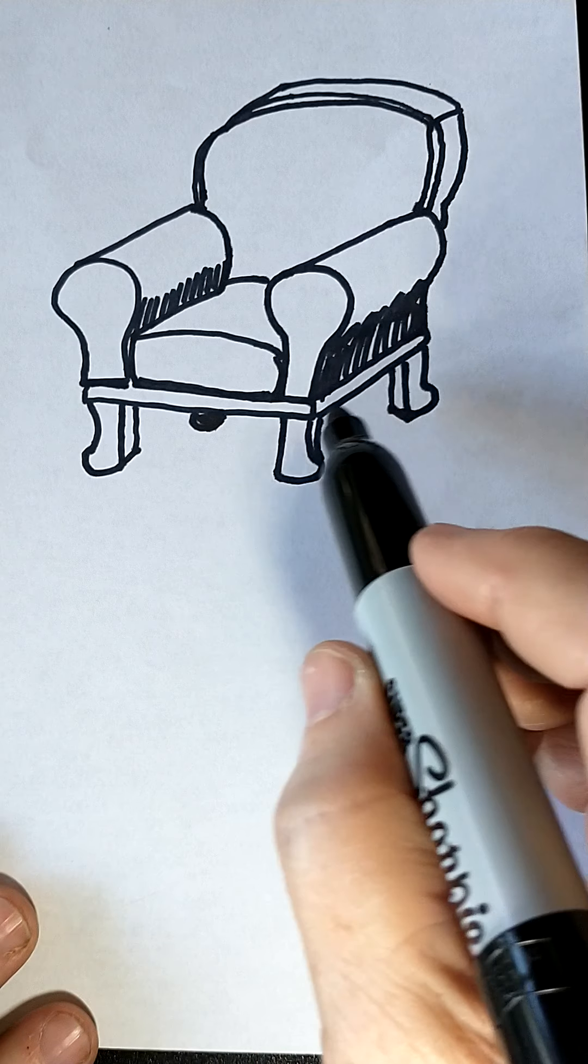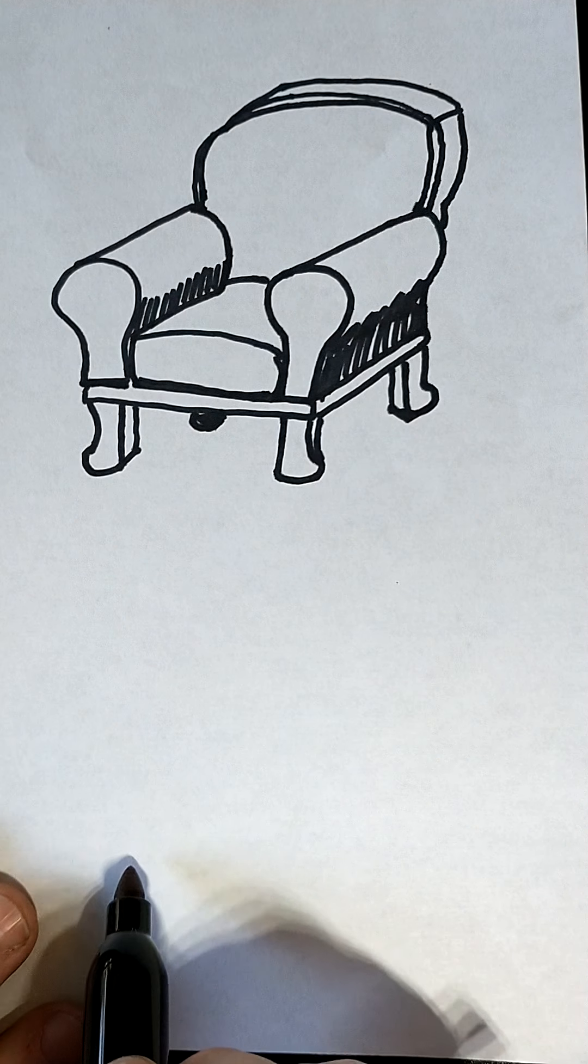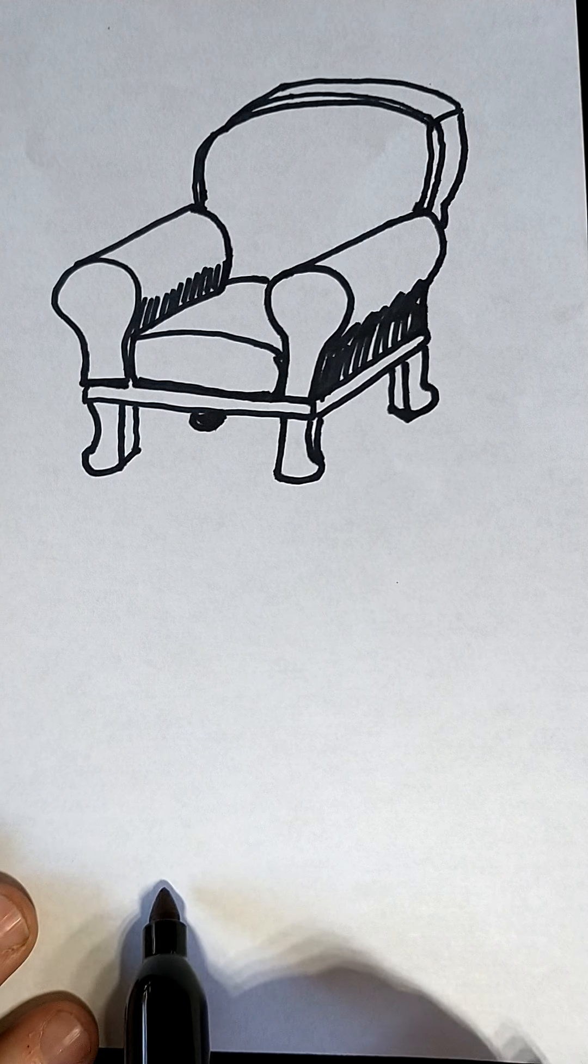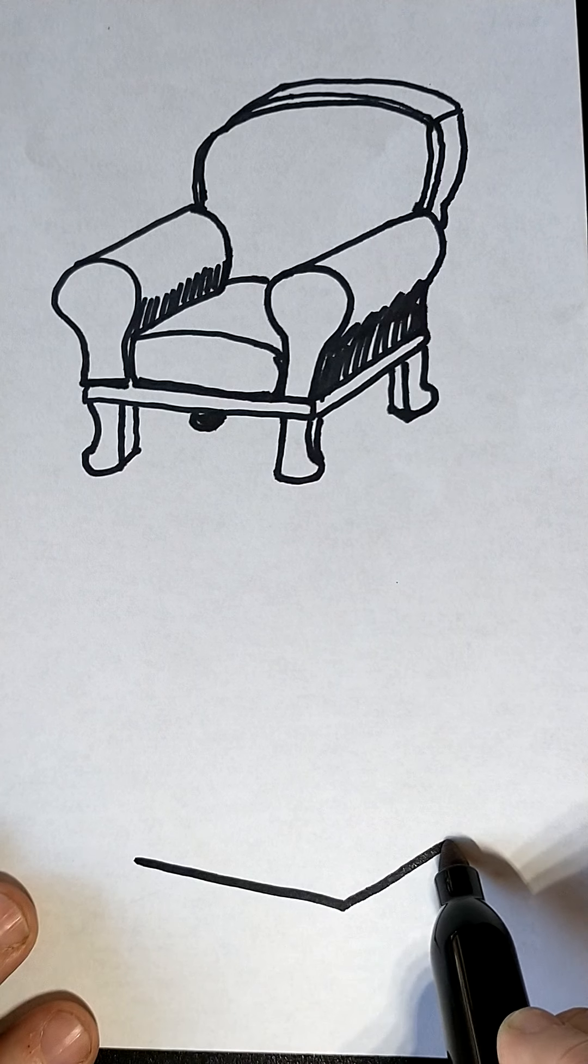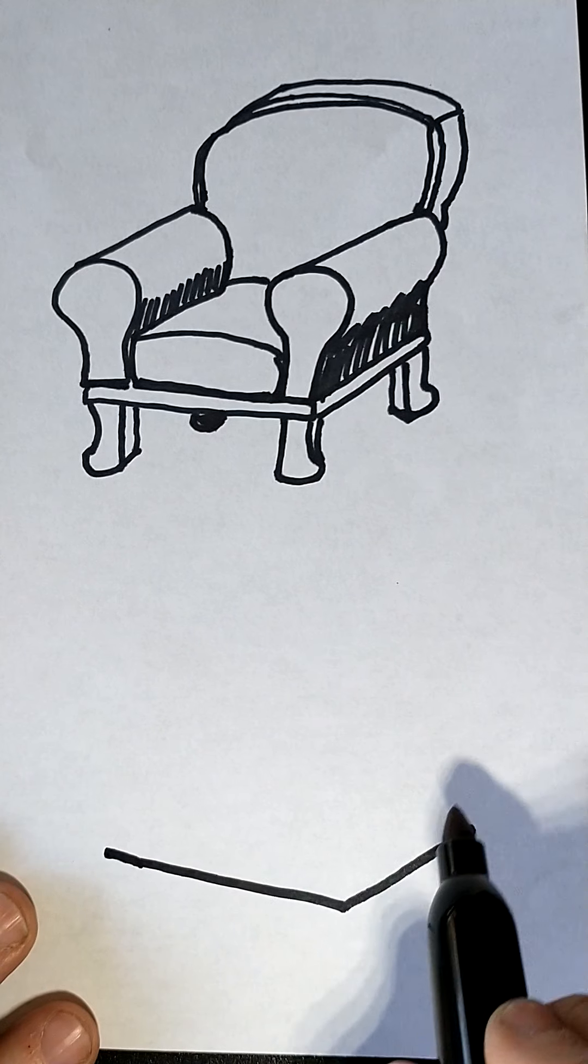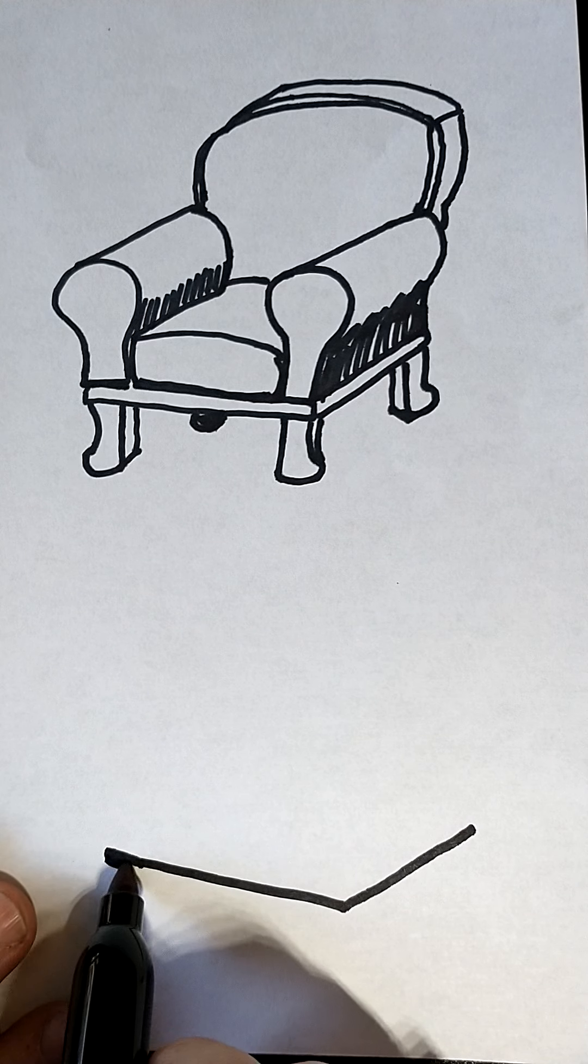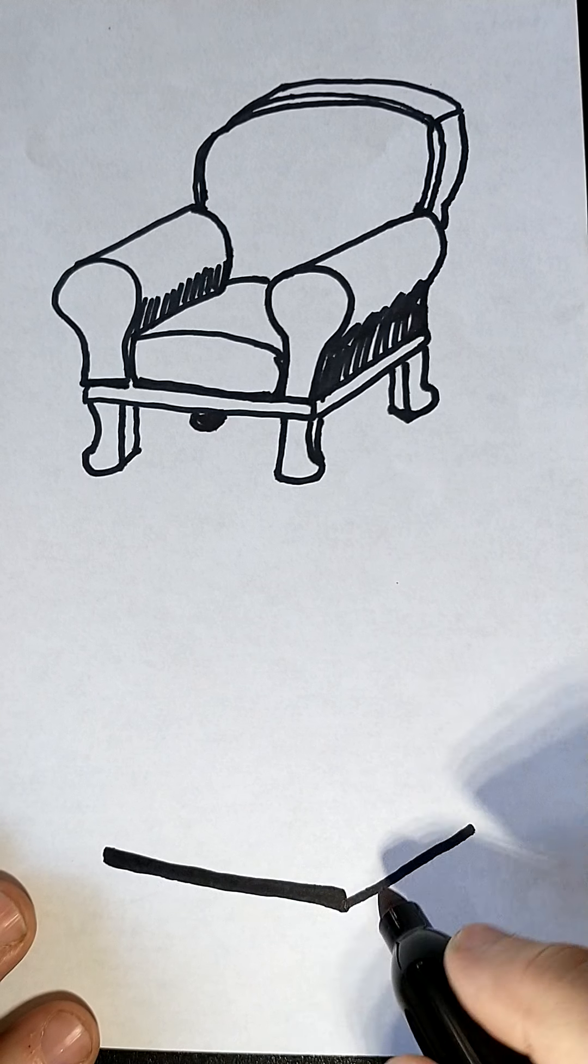So there's kind of a V here, so let's make the base of our chair down towards the bottom of the paper and let's make the starting V for the chair. Maybe it's a little wider than it is long, so this line might be a little longer than this one.